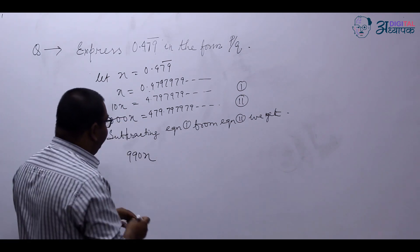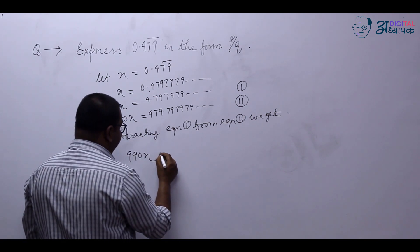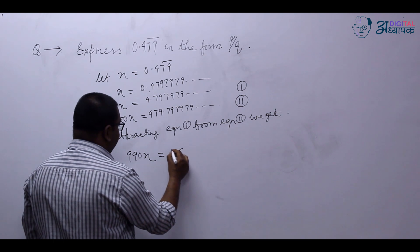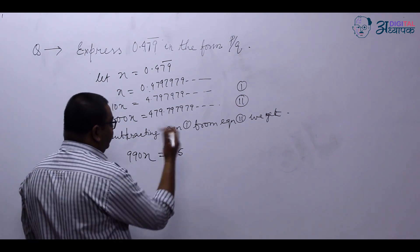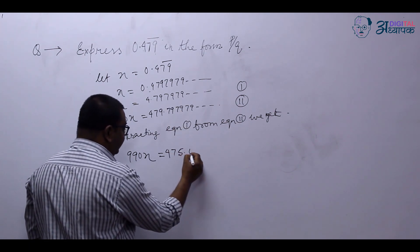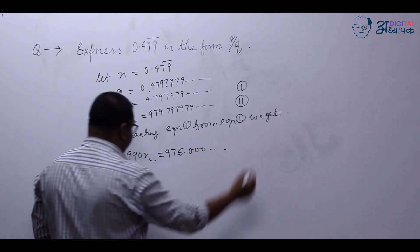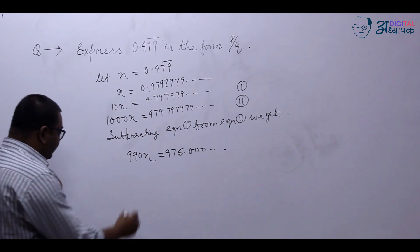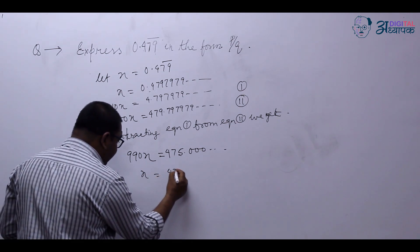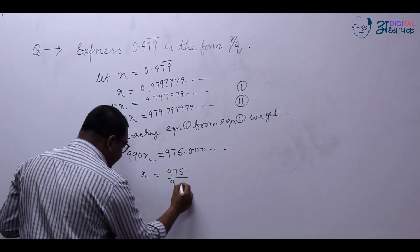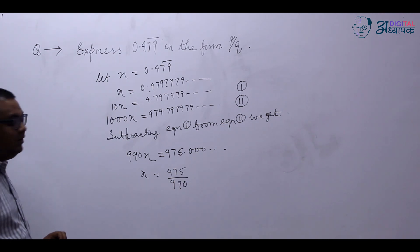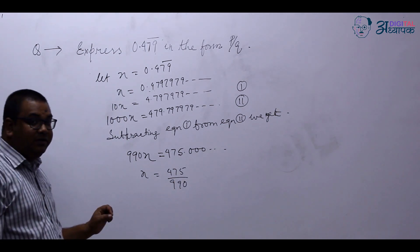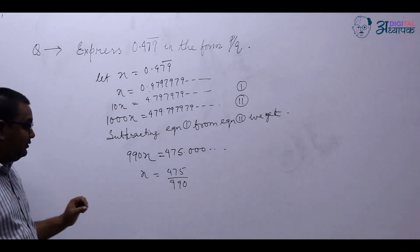479 minus 4 becomes 475. And if you subtract 79 from 79, it will become 0. So you have got 990x is equal to 475. So x is equal to 475 upon 990. We have already converted into the form P by Q but we need to convert it in its simplest form.